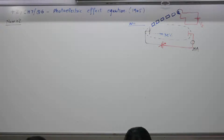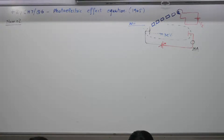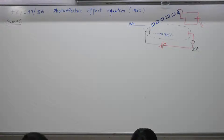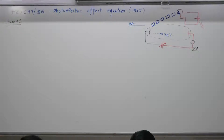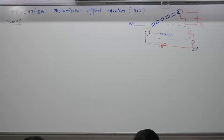Numerical 2: When light of wavelength 400 nanometers is incident on the cathode of a photocell, the stopping potential recorded is 6 volts. If the wavelength of incident light is increased to 600 nanometers, calculate the new stopping potential. Given: h = 6.6×10⁻³⁴ J·s, c = 3×10⁸ m/s, e = 1.6×10⁻¹⁹ C.